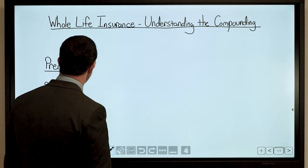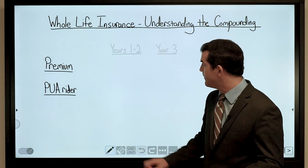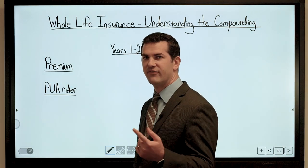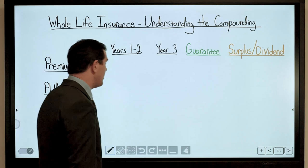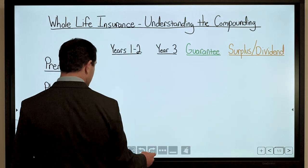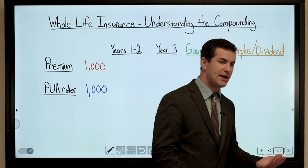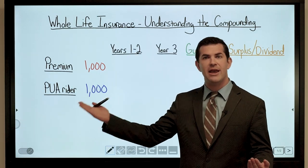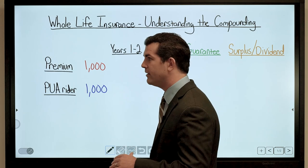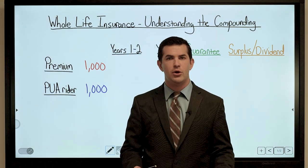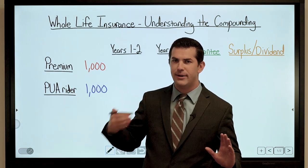To begin: when I pay money into a policy, it can go to the base premium or the PUA component. In the first two years, then from year three forward, I've got my guaranteed rate — which is 4% with most companies — and then my surplus and dividend. To simplify, let's assume I'm paying $1,000 per year into the base premium and $1,000 per year into the PUA rider, which stands for paid-up additions.